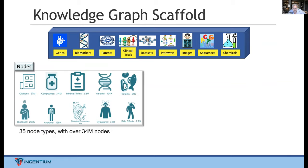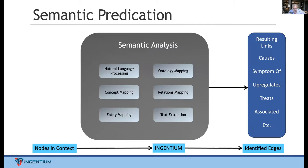The next step was to do the same thing looking at nodes in context — where you have two or more nodes in a particular database or some textual information. Using semantic analysis and semantic predication, we ask: what's the relationship between these nodes? Can we define what a link or an edge might be in graph terms between these? Does it cause that, is it a symptom of something, does it upregulate, does it treat a disease? And we've defined edges between the nodes we've discovered.